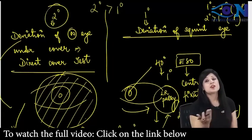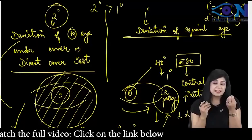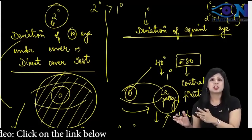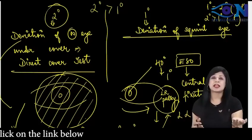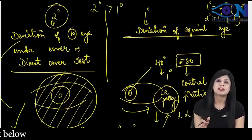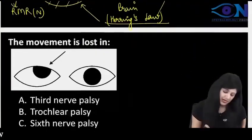Now why it is equal in non-paralytic? Obviously, see, non-paralytic means there is no palsy. No palsy means no ocular limitation. So this means whether it's a primary deviation or secondary deviation, both will have equal. So primary is equal to secondary in non-paralytic, secondary is more in paralytic.